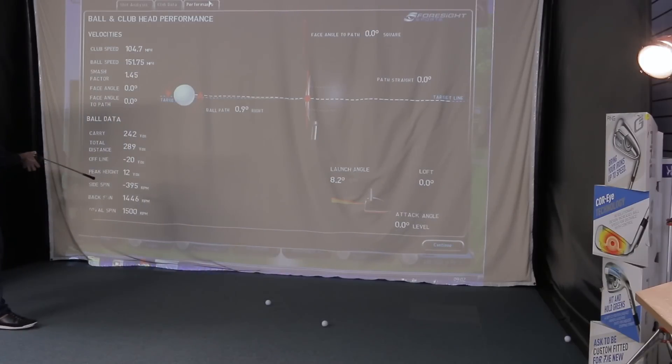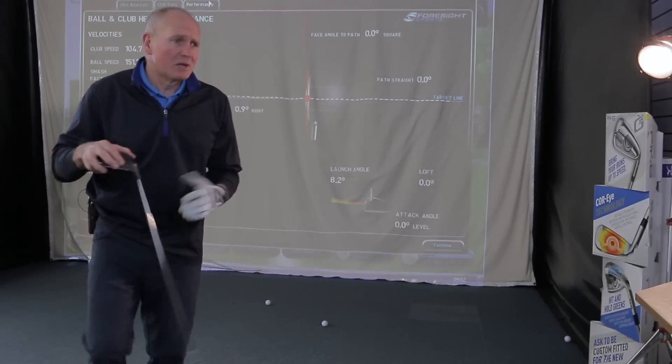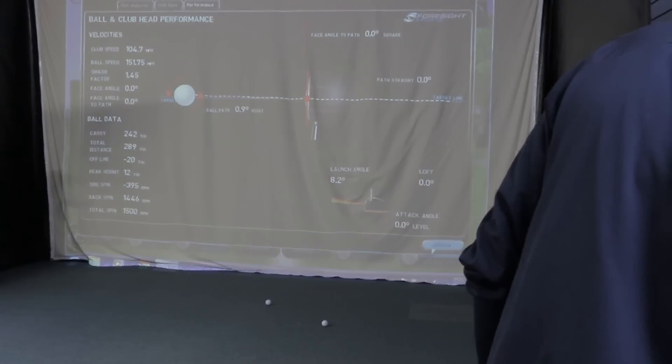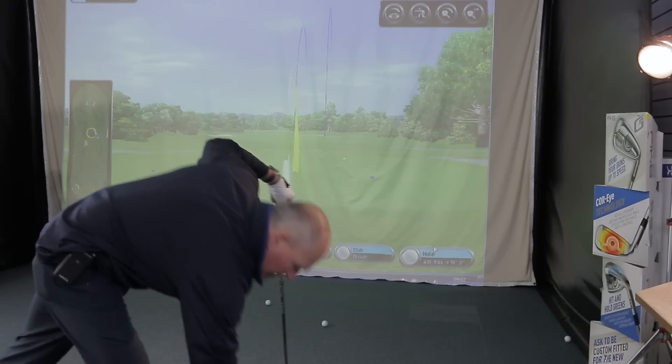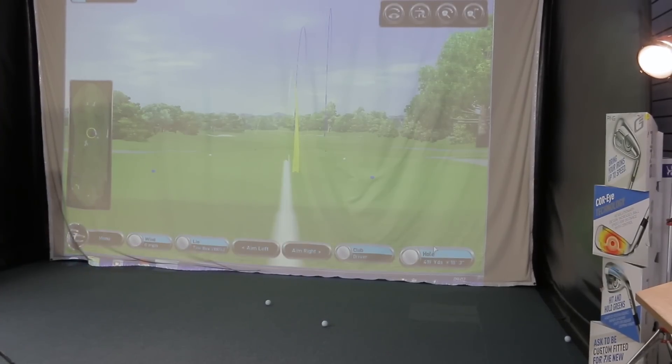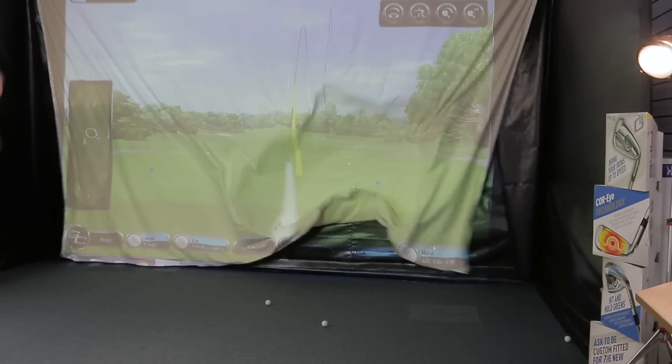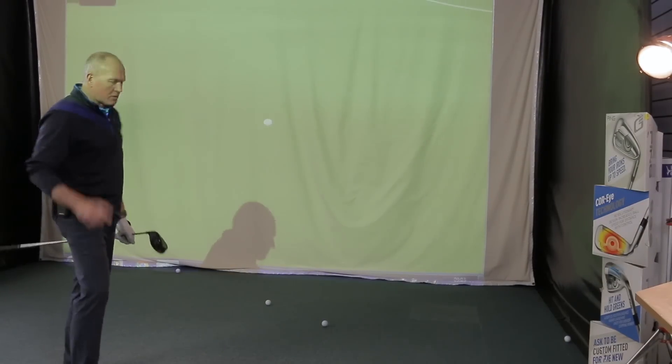So here we start to see the launch is right down at 8.2, which is way too low really, isn't it? 8.2 launch, but the spin right there dropped down to just under 1500, gave me 242 carry. Ball speed was up to like 151, 152, and huge run-out. So it's one of those like knuckle balls where, you know, it's like nose-diving and going forward. That was interesting. Again, I still don't think I've quite got this driver set perfectly for me yet, but we're starting to see some signs of how...